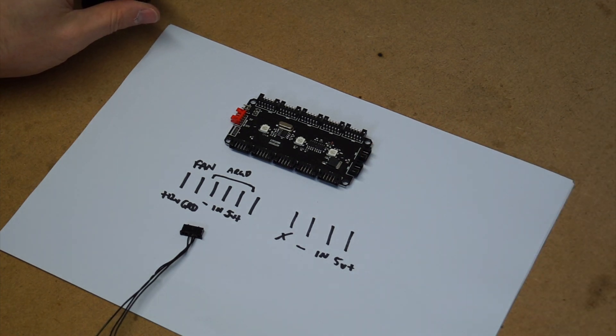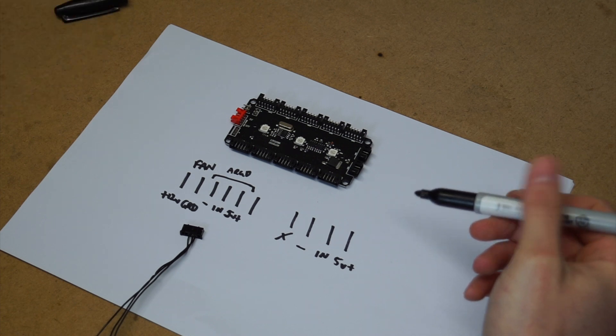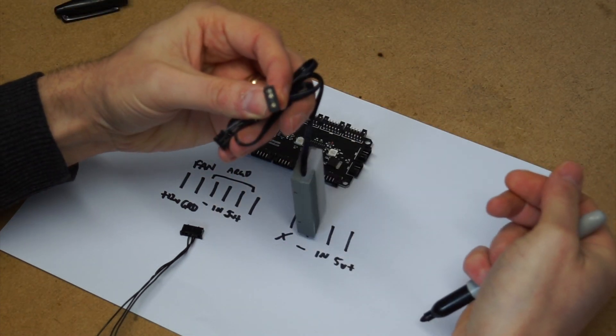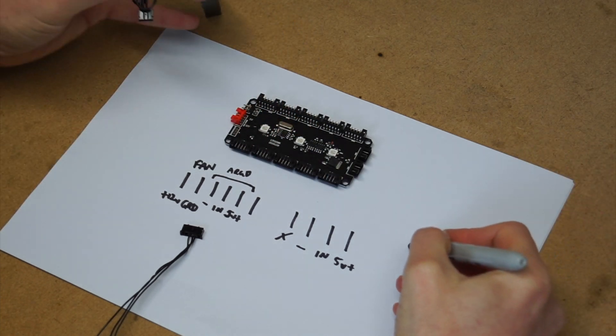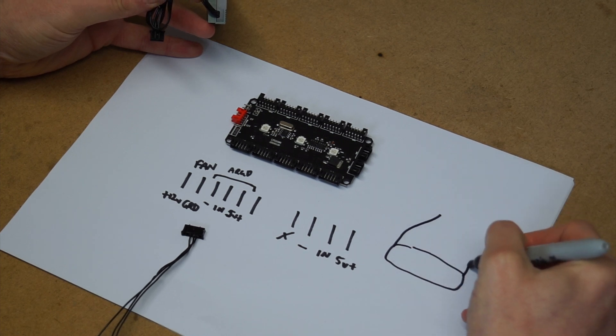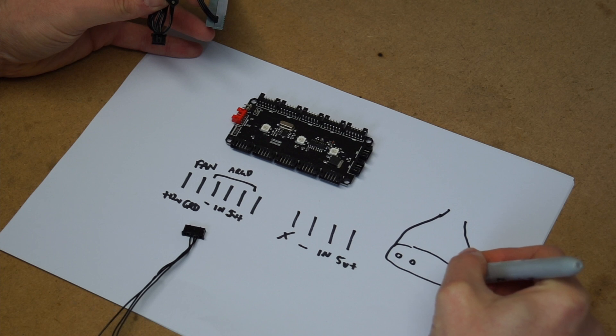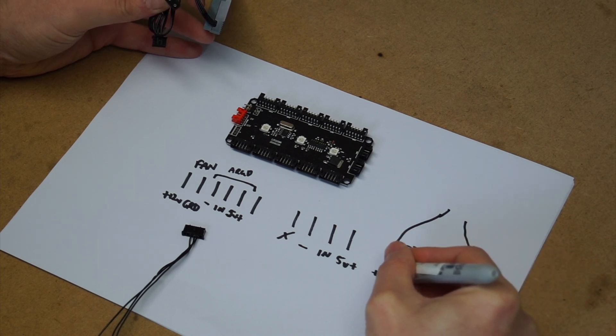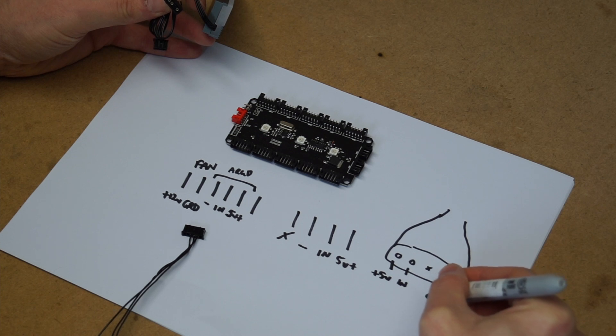Now understanding the pinout for these plugs is pretty simple. On the end of the plug you have three tiny little holes and a blank in the middle, and these actually align up to the plus five volt on this end, the data in, and the ground.